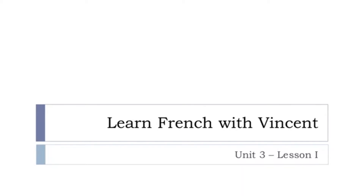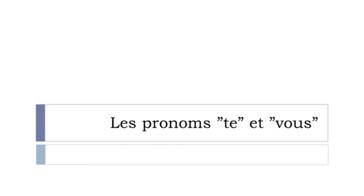Bonjour à tous, hi everyone, and welcome to Learn French with Vincent. This is Unité 3, Leçon I, and in this lesson we'll discover together les pronoms te et vous. Te means 'you' and vous also means 'you'. The difference is that te is the singular form and vous is the plural form, so let's see how it goes.